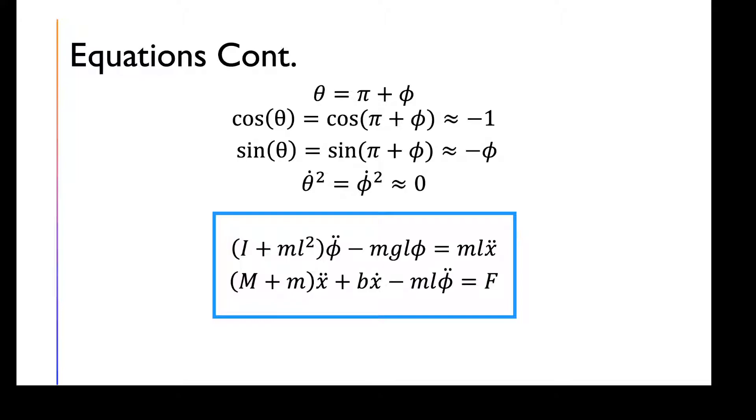When equations are linearized about the vertical upward equilibrium position, theta equals pi. Let phi represent a small angle from the vertical upward direction, and assume that theta equals pi plus phi.